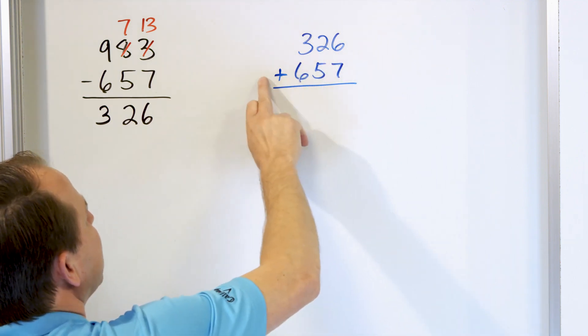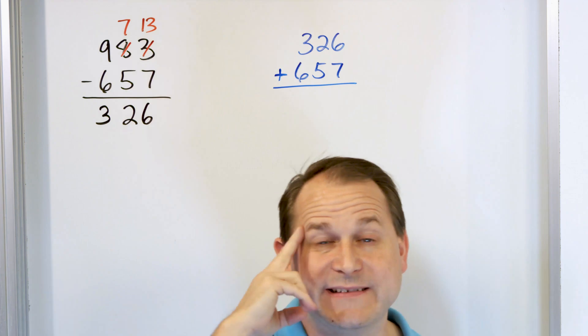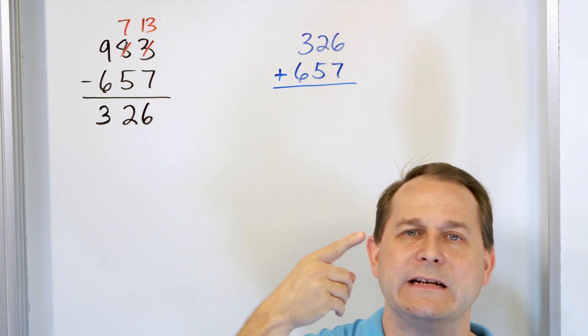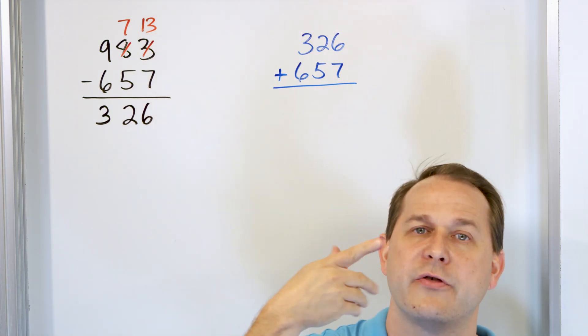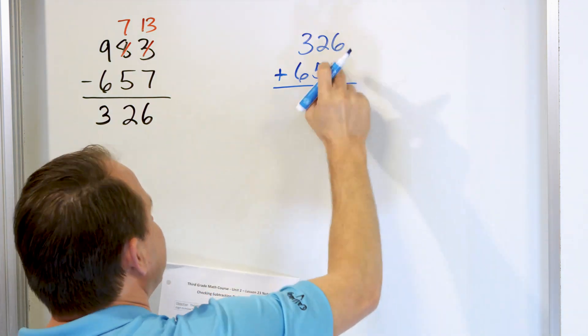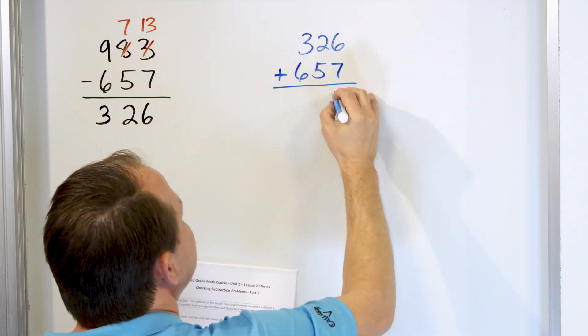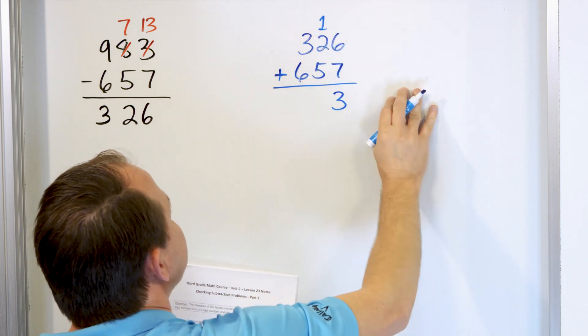So what is 6 plus 7 or 7 plus 6? Start with 7 in your mind and go up: 8, 9, 10, 11, 12, 13. We land on 13. So 7 plus 6 is 13, and it's a two-digit number so we carry a 1.